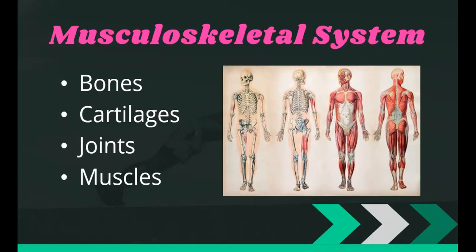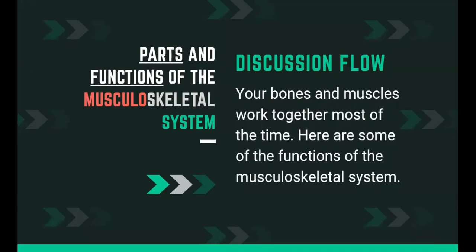In our discussion about the musculoskeletal system, we have the bones, cartilages, joints, and muscles. Your musculoskeletal system is made out of your skeletal and muscular systems. These two systems work together to move the different parts of your body — the bones, cartilages, and joints make up the skeletal system, while your muscles make up the muscular system.